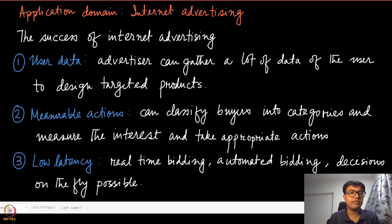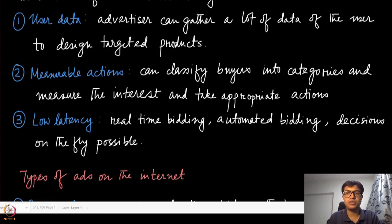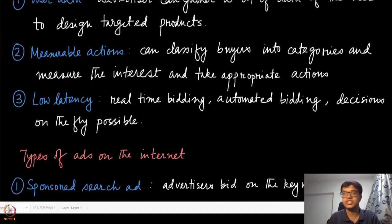One can also take measurable actions. Once you can characterize the buyers into certain categories, then the advertisers can measure the interest and take appropriate action. If someone is watching a specific kind of product page multiple times or specific kinds of YouTube videos or Facebook pages, then one may target that kind of users because of their actions.